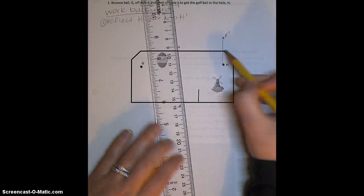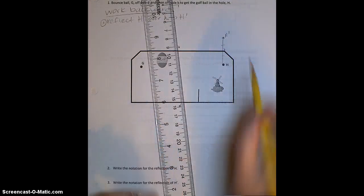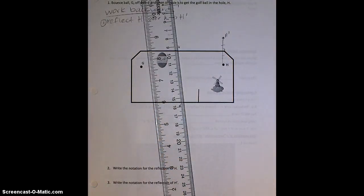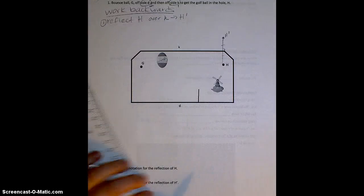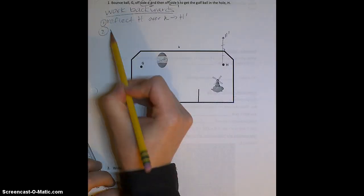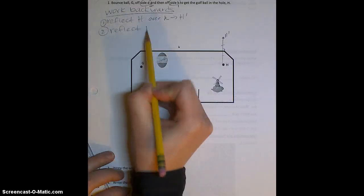Label that point H prime, and then include my symbols to show how I got that H prime. Once I have H prime, then I'm going to use that point to do my next reflection.